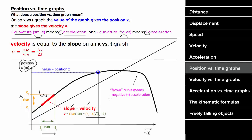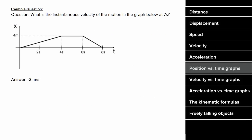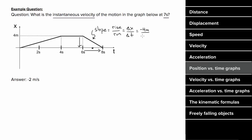Graphs with constant slope have constant velocity and zero acceleration. For example, with this graph, to find the instantaneous velocity at seven seconds, we find the slope in that region. Choosing six and eight seconds as convenient points, the rise is the change in position — the graph drops four meters, so displacement is negative four meters. The run is two seconds. Since the slope in this region is negative two meters per second, that also equals the velocity in this region.